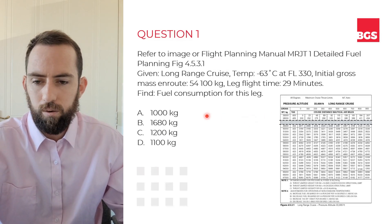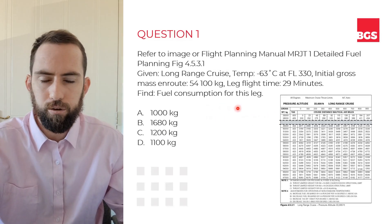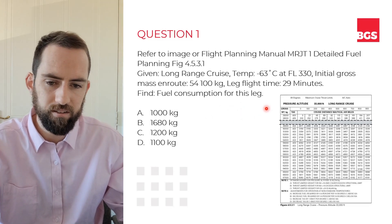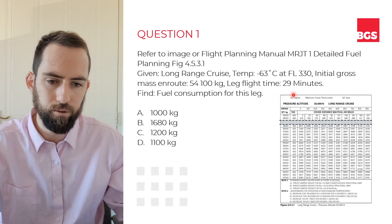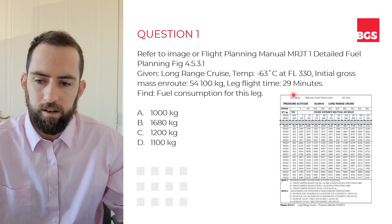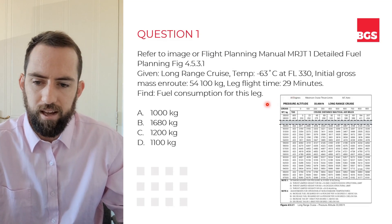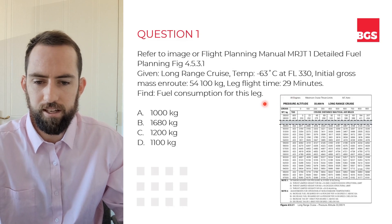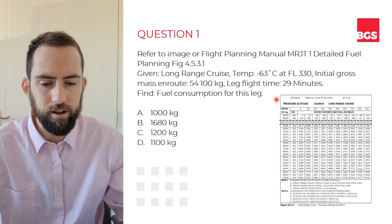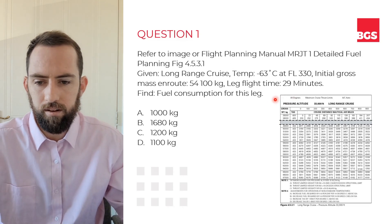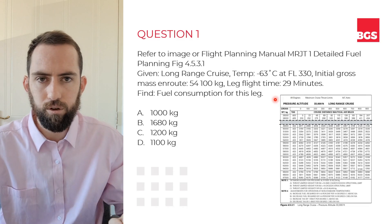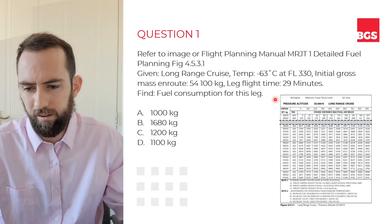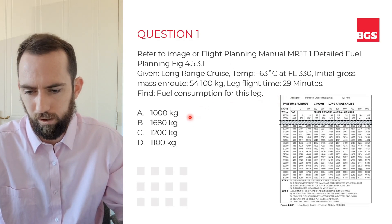So the question: given long range cruise temperature of minus 63 degrees Celsius at flight level 330, initial gross mass en route is 54,100 kgs, and the leg flight time is 29 minutes. Find the fuel consumption for this leg. And then we've got a range of four answers.